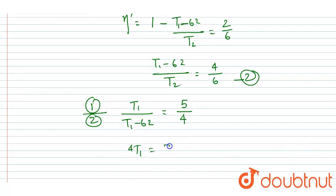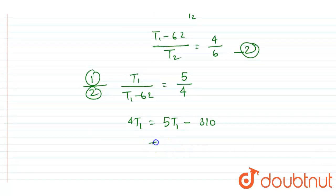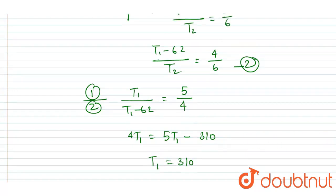If you solve this, you will get 4T₁ equals 5T₁ minus 310, so it will be equal to T₁ equals 310. Now you can see